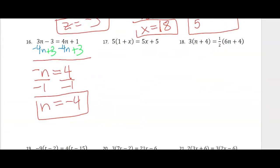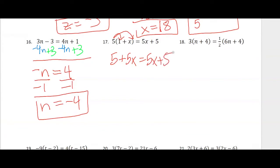For the next one, I need to start with the distributive property. I get 5 plus 5x equals 5x plus 5. If you notice, you have the same thing on both sides — you can just stop there and recognize that as a true statement, meaning any x value you plug in will make it true. So we're going to say infinitely many solutions.